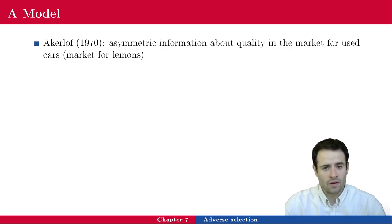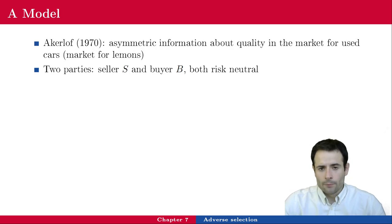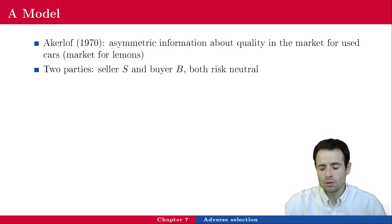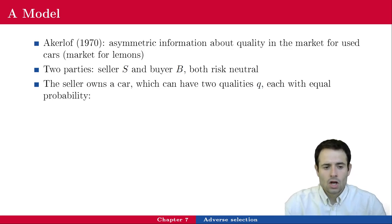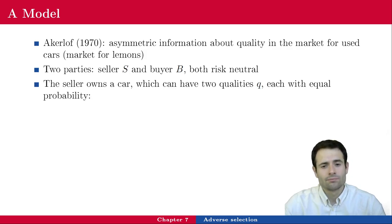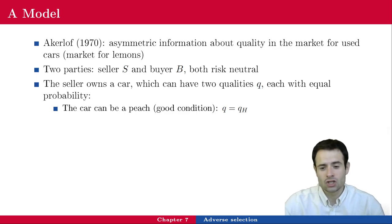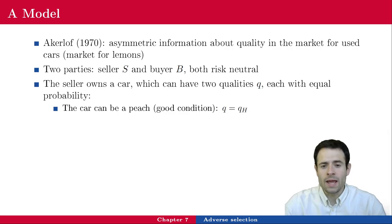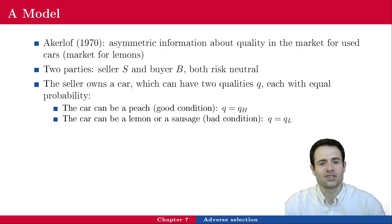The market has two parties: a seller S and a buyer B. The seller owns a car which can have two different qualities, each with equal probability. With a probability of 50%, the car can be a peach — the term for a good condition car — in which case the quality is QH (H for high). Or the car can be a bad condition car, called a lemon, in which case the quality is QL (L for low).